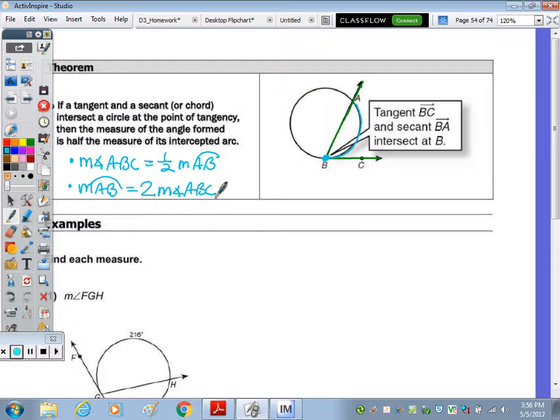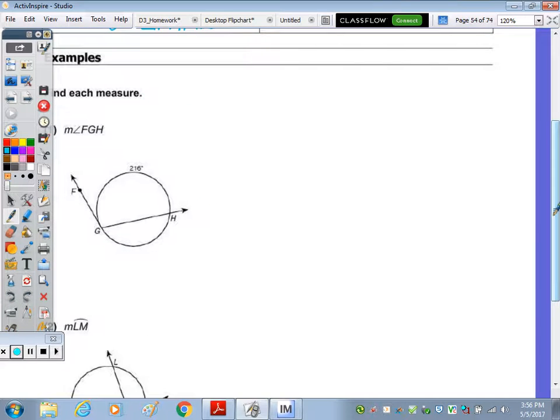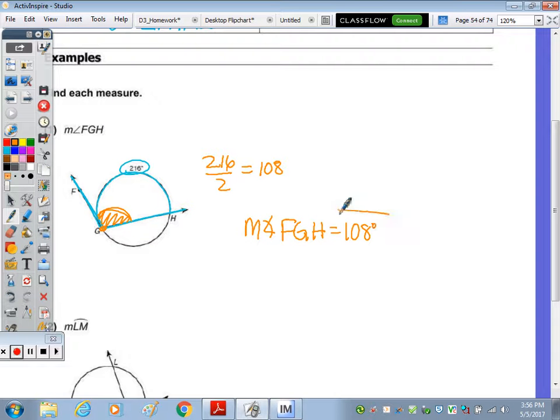So let's look at number 1. We need to find the measure of FGH. So if we trace, FGH is this angle right here. The arc that it intercepts goes from here to here, which is 216. So that means this angle here is going to be half of 216. 216 divided by 2 is 108. The vertex is still on the circle. So it's not really a different theorem. So the answer, the measure of angle FGH is 108 degrees.